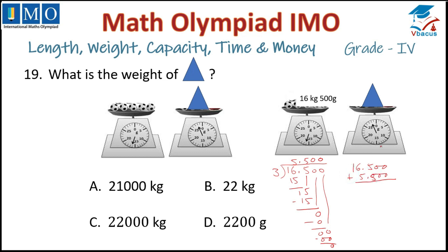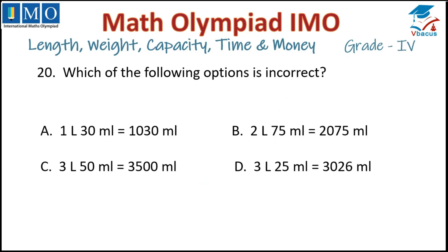If we add the value of 3 balls (16.500) and 1 ball (5.500): 0, 0, 5 plus 1 is 6 — carry 1 — 7 plus 5 is 12, carry 1, 1 plus 1 is 2. So 22 kg. The answer is 22 kg, option B. Tick option B.